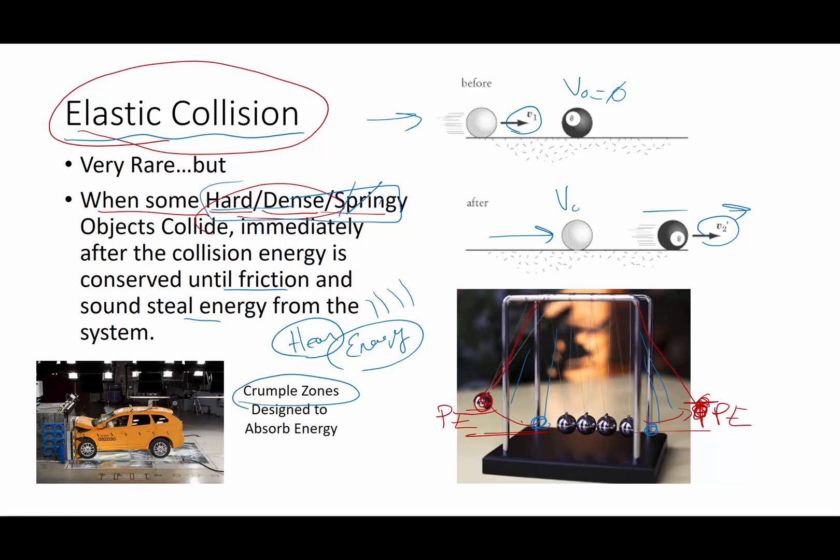Now, crumple zones in automobiles are the front area of an automobile that is actually designed to crumple. These do not engage in elastic collisions. When auto manufacturers produce a car, what they want is not to have elastic collisions. And they actually want the car to slow down because energy is absorbed. Why? Because it protects you and me as the drivers and the passengers in the car. So this is definitely not a situation where the collisions are elastic.